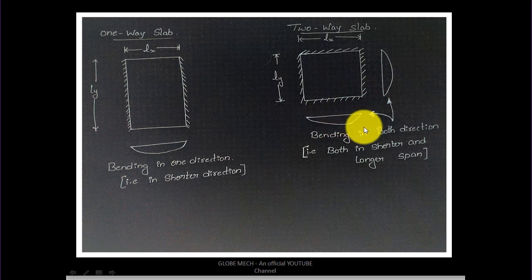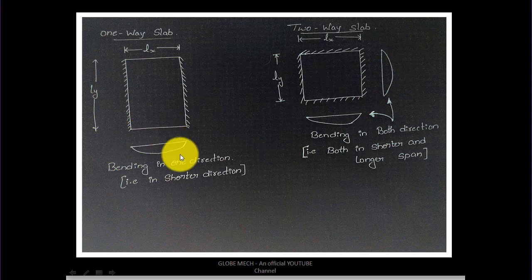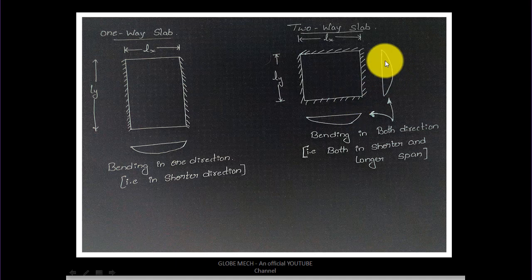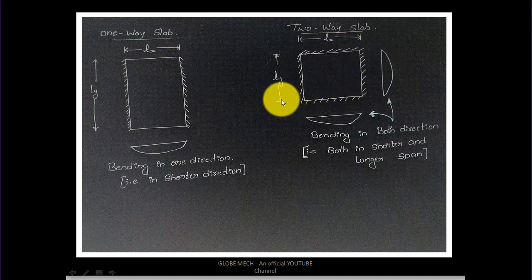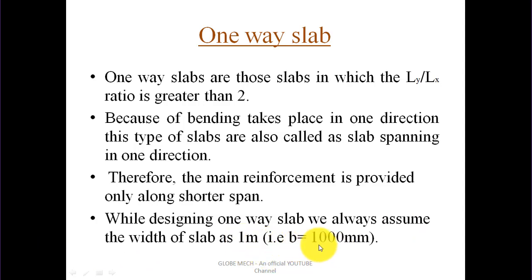In a two-way slab, bending takes place in both directions, so main reinforcements are provided along both the shorter and longer span directions. In a one-way slab, bending takes place in only one direction, so it is known as slab spanning in one direction. A two-way slab is known as slab spanning in two directions. While designing a one-way slab, we always assume the width of slab is one meter, that is b = 1000 mm.